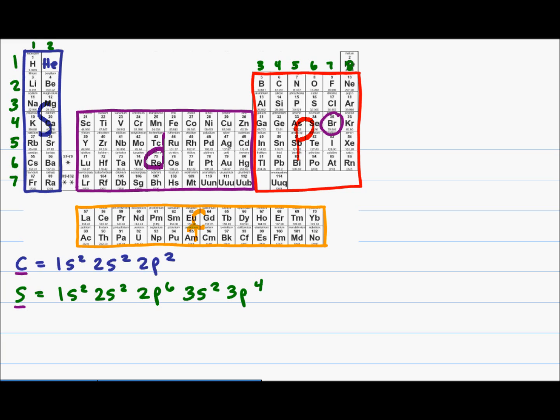It appears that the d-block shows up at principal energy level number four, however it is actually part of principal energy level number three. The only reason it's written lower on the table is because a 3d orbital has more energy than a 4s orbital, and according to the Aufbau principle you fill from lower energy followed by higher energy.